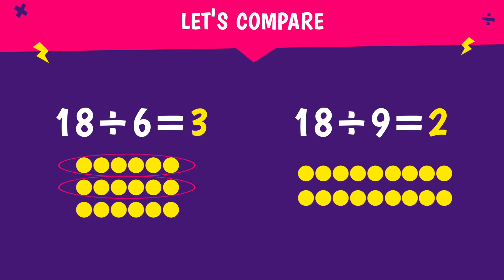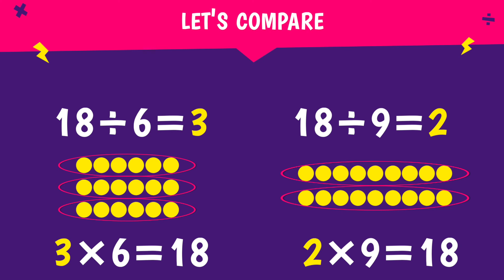18 into groups of six is three. 18 into groups of nine is two. Both can be solved using our table skills. Three groups of six is 18. Two groups of nine is 18.